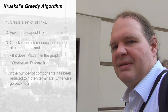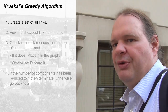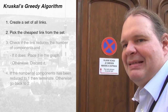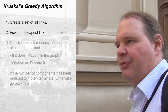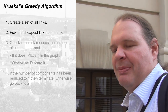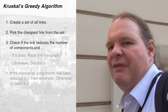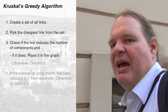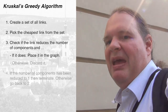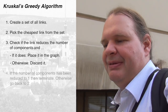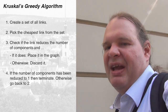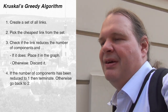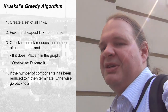We can summarize Kruskal's algorithm as follows. First, create a set containing all possible links. Second, pick the cheapest link from the set and remove it. Third, check if placing this link would reduce the number of components — if it does, place it; if it doesn't, discard it. Fourth, check if the number of components is now one. If it is, we are done. If not, go back to step two and continue.